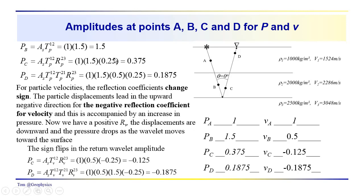At C, we have 1.5 times the reflection coefficient, which is 0.25, giving us 0.375 as the amplitude of the pressure wave at point C. Then carrying on with the computations, we have the product of the two transmission coefficients — one going down, the other going back up — so we have 1.5 times 0.5 times the reflection coefficient 0.25, giving us 0.1875.